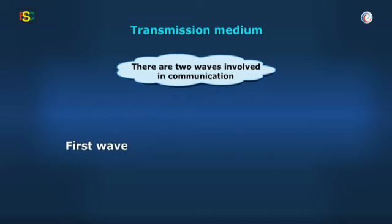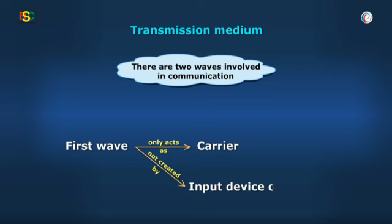The first wave is the one which only acts as the carrier and is not created by the input device or the transmitter. This is known as the carrier wave.